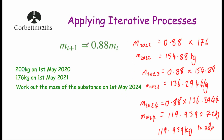We could have used our calculator for this one. Type in 200 and press equals. Then type in 0.88 times ANS and press equals to get the mass in 2021. Press equals again to get the mass in 2022, again for 2023, and one more time to get the mass in 2024. And that's it.